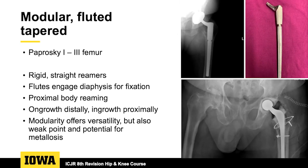Modern modular fluted tapered stems are the workhorse of revision total hip. These can be used for Paprosky type 1 through 3, and as we heard in the last talk, we occasionally push them for Paprosky type 4 on rare indications. The risk of these stems is subsidence — if you're going to put in a modular fluted tapered stem, you really have to ream.